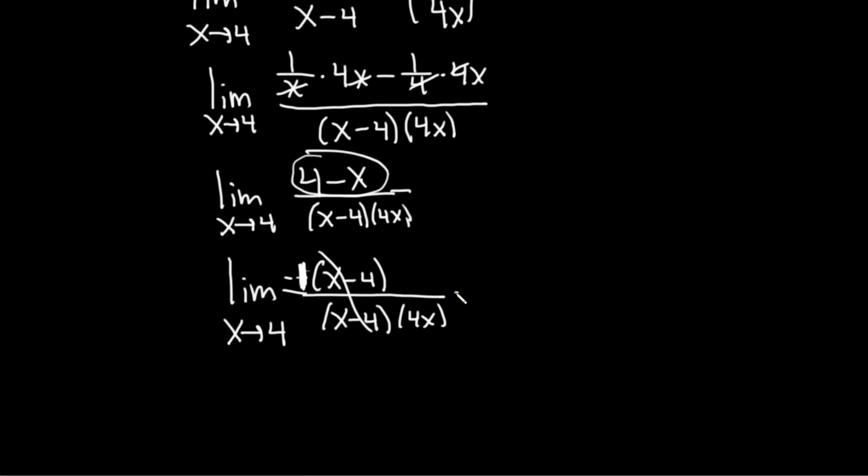These cancel. So this is equal to the limit as x approaches 4. We still have that really big negative 1 up top. There we go. Now it's a little over 4x.